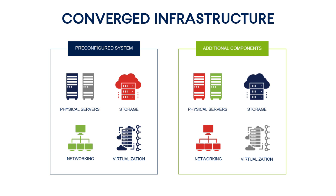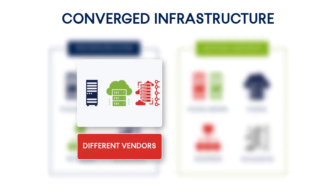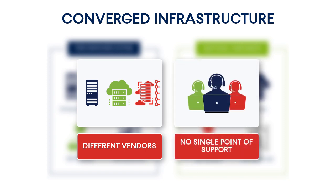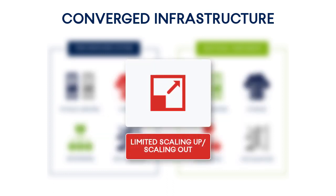There are two main limitations of the converged infrastructure. First, the components such as servers, storage, networking, and virtualization usually come from different vendors. As a result, if some components go down and have compatibility issues, it's hardly possible to resolve those issues quickly, since there is no single point of support. Second, the individual components comprising the fully configured system are designed and configured for specific purposes. As a result, it's hardly possible to scale out or scale up such a system.